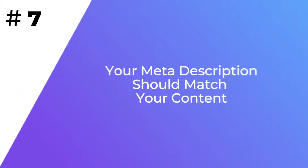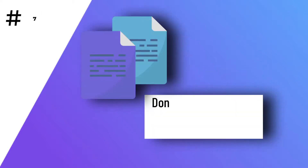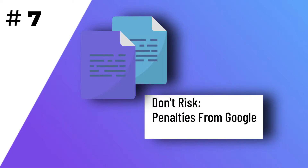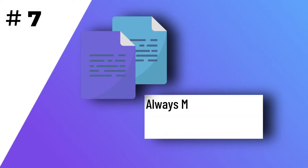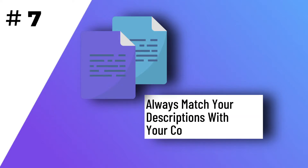Number seven: your meta-descriptions should match your content. If you create a misleading meta-description or try to bait users into clicking on your links, you're risking a penalty from Google. Plus, you'll also get a high bounce rate since users won't find what they're looking for on your page. So always match your descriptions with your content because they provide a short summary to the visitor.